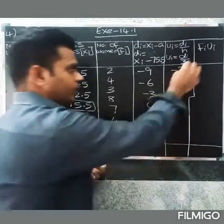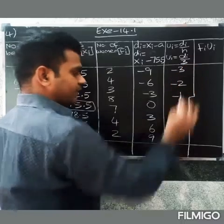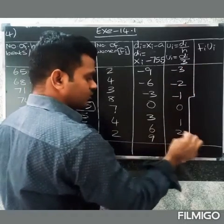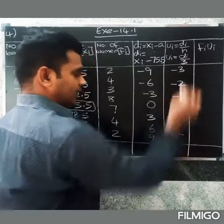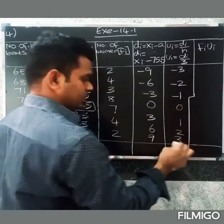Continuing Ui values: 3 divided by 3 equals 1; 6 divided by 3 equals 2; 9 divided by 3 equals 3.